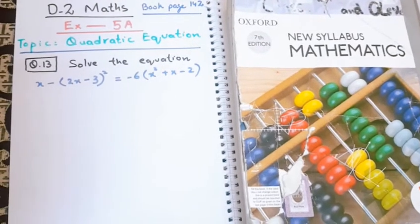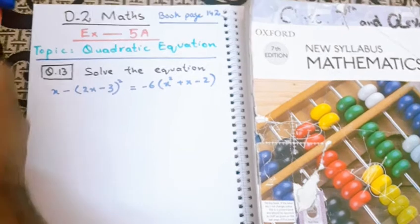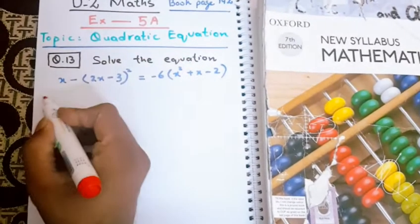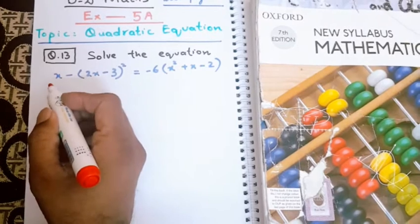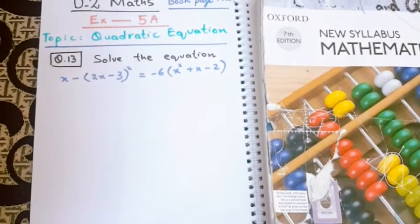Hello assalamu alaikum students. This is D2 Maths book, page number 142, exercise 5A, and the topic is quadratic equation. Question number 13: solve the equation. I have already uploaded question number 11 of this exercise.